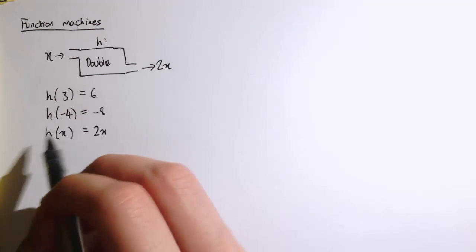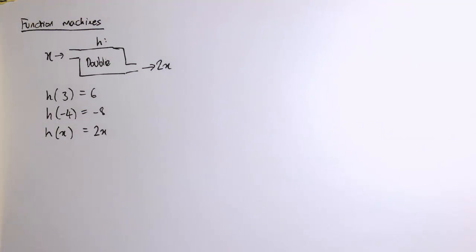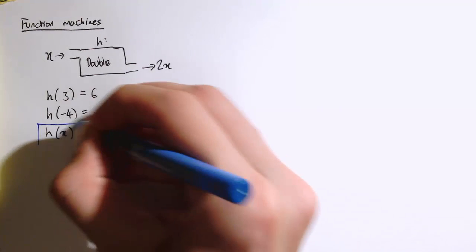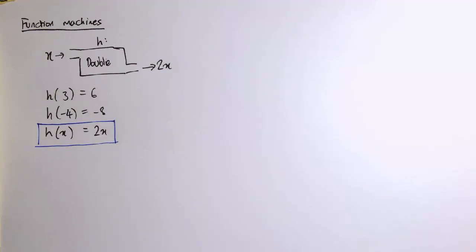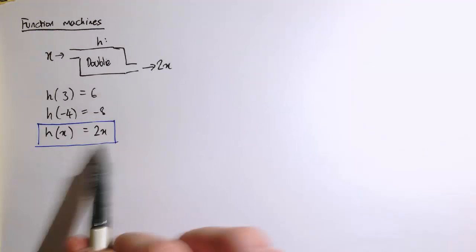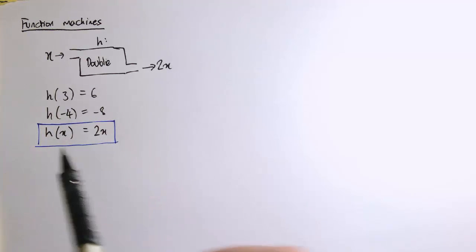And this one then, h of x equals 2x is a bit different from the previous rule of functions because this one really actually defines the function, defines the rule of the function. Whatever we put in x, we get out 2x. Whereas these are really just instances or examples of the machine applying to a particular value.